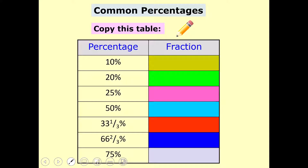The first thing we're going to look at is common percentages. You can see the list of percentages here, and when we get to calculating the percentage of an amount or quantity, it's much easier to think of the percentage as a fraction — that's going to help us figure out what we need to do. This table shows common percentages; I'd like you to copy it down and remember it as best you can, because we're going to be referring to these throughout the examples.